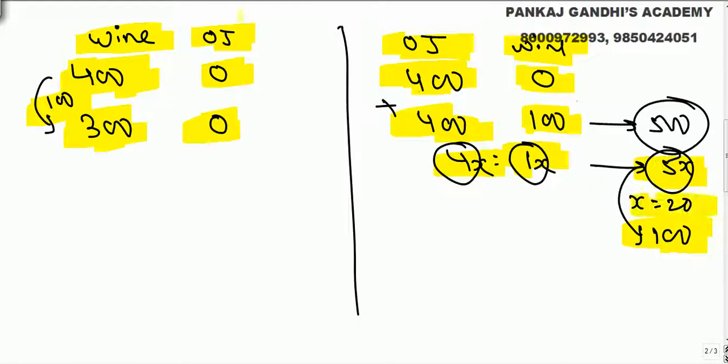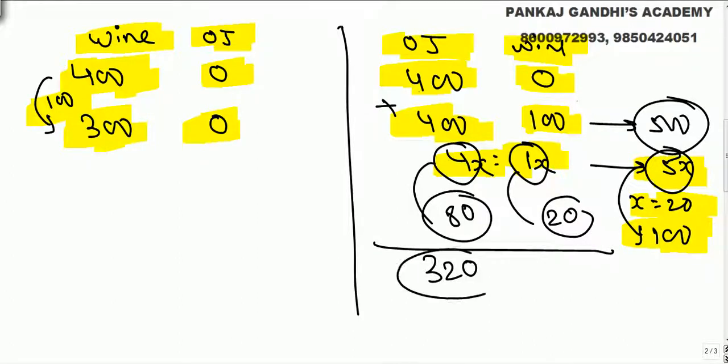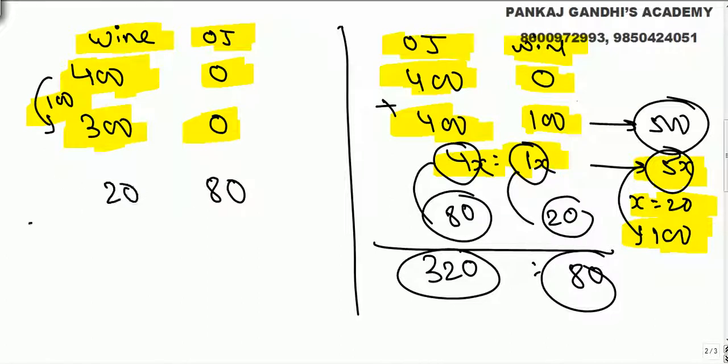And this thing ratio right now is 4 is to 1. So if we take out 5 grams, this will go 4, this will go 1. So 4x, 1x, and this will go 100, so simply this will go 100. So remaining is 320 and 80. This goes here, 80 orange juice goes, 20 this goes, this went here, so this becomes 320, this becomes 80.